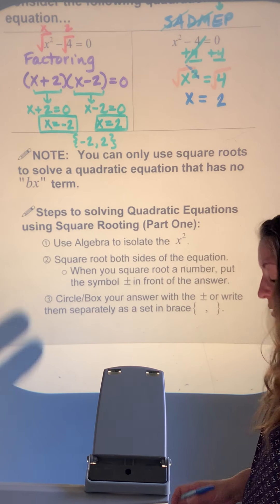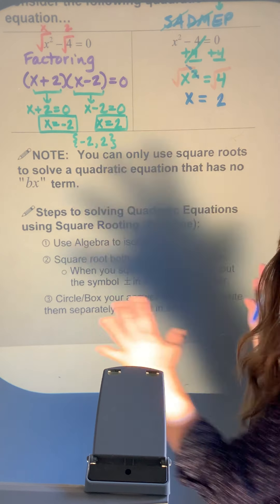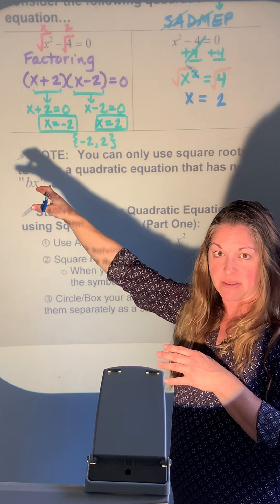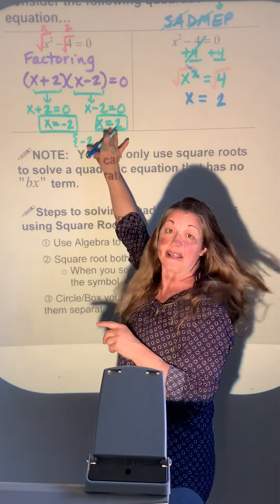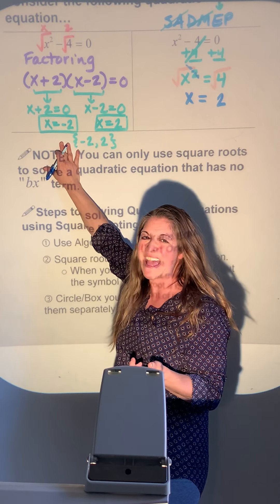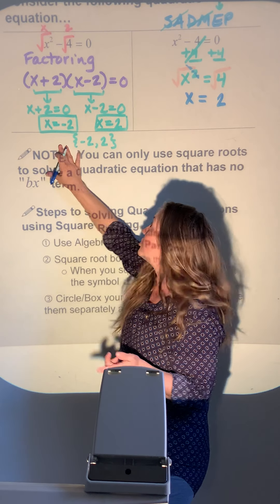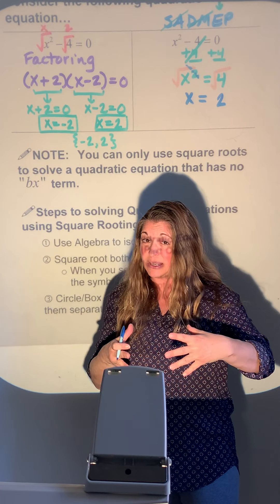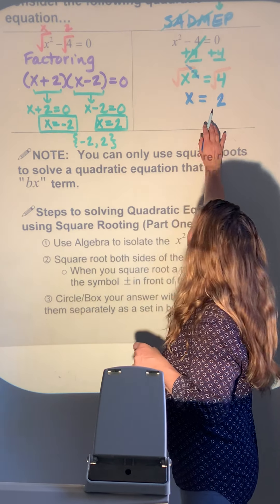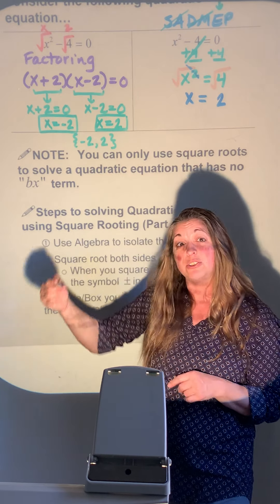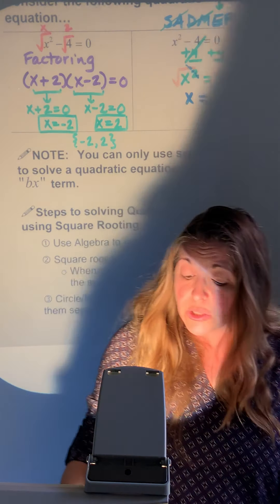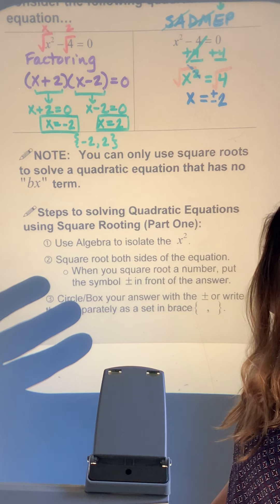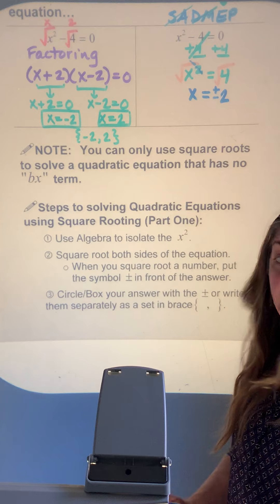Let's pause and compare the two problems. Using the factoring method, we got two answers: positive 2 and negative 2. So when using the square root method, you have to remember it's not just 2 but also negative 2. We write the plus or minus symbol.